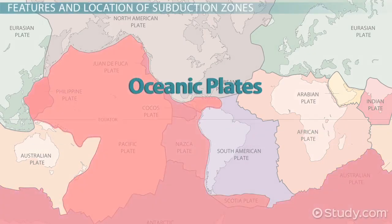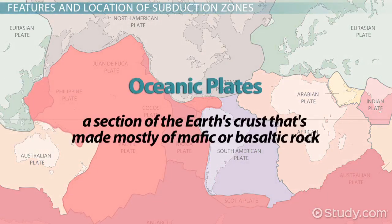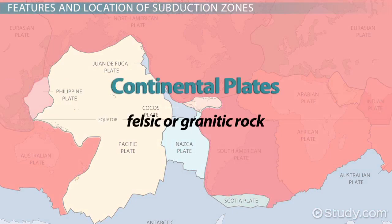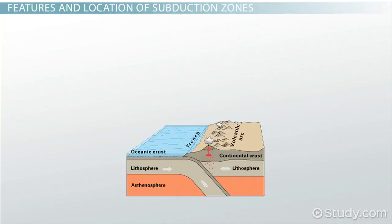Oceanic plates are unsurprisingly underneath the oceans, but this isn't what makes something an oceanic plate — because there are exceptions to this rule. Instead, an oceanic plate is a section of the earth's crust that's made mostly of mafic or basaltic rock. In contrast, continental plates are composed of felsic or granitic rock.